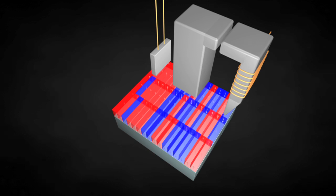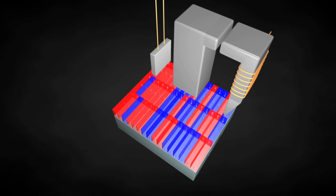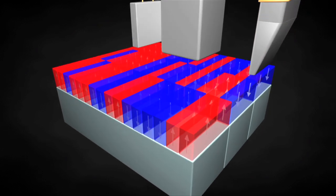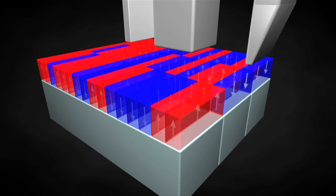We saw earlier that information can be stored by magnetizing very small regions of a hard disk or some other storage medium. Each of these regions corresponds to one unit of information called a bit. If we want to store more data in a smaller device, we have to reduce the size of these regions.